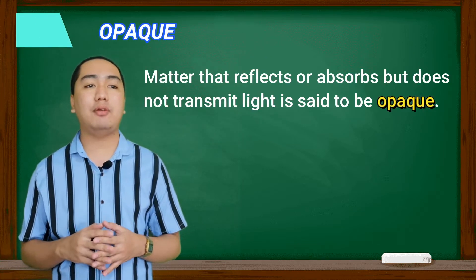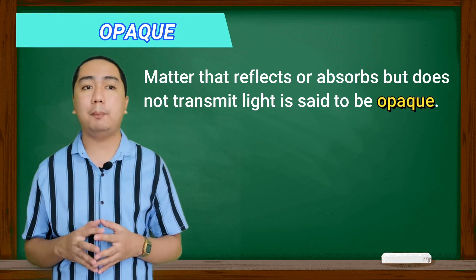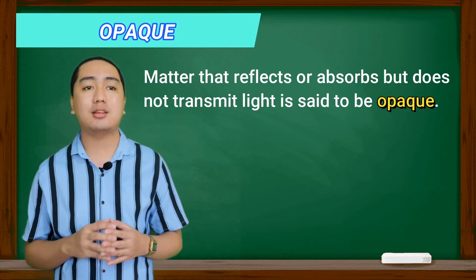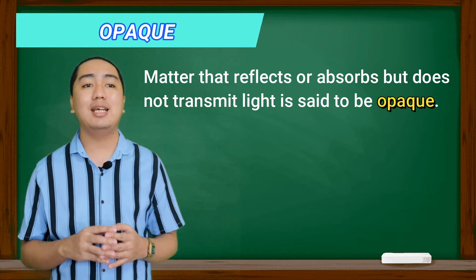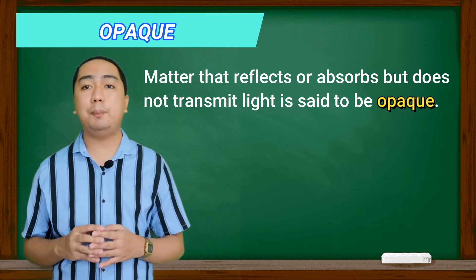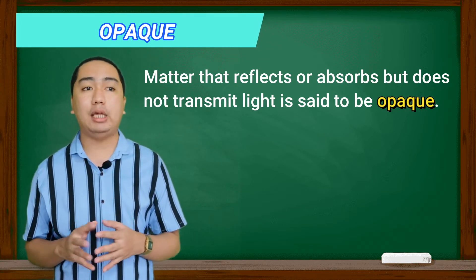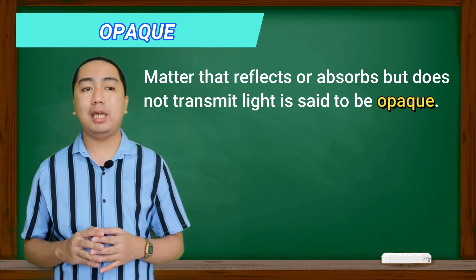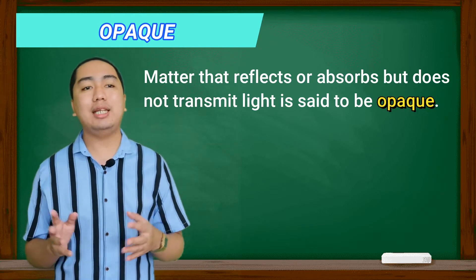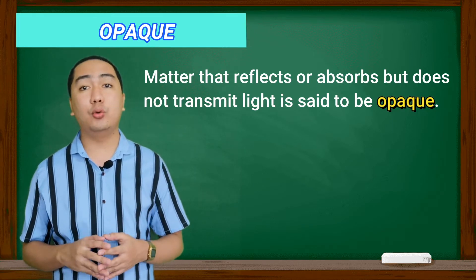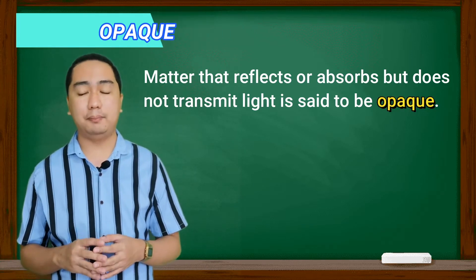Matter that reflects or absorbs but does not transmit light is said to be opaque. Most solids are opaque, and you cannot see through them.